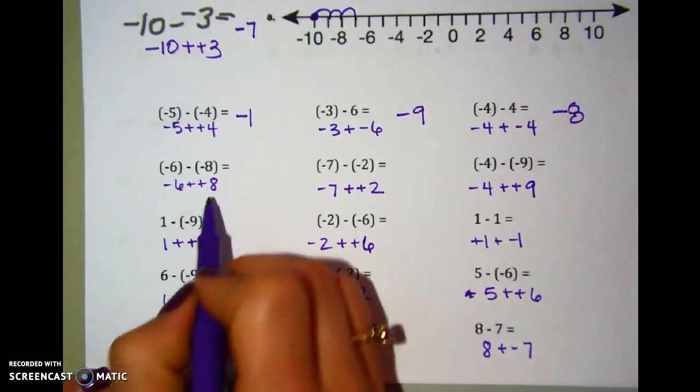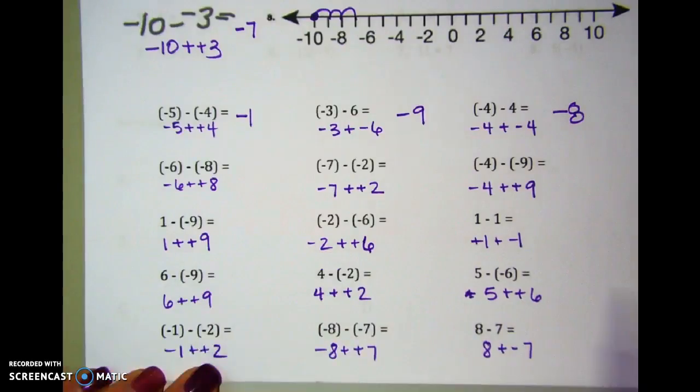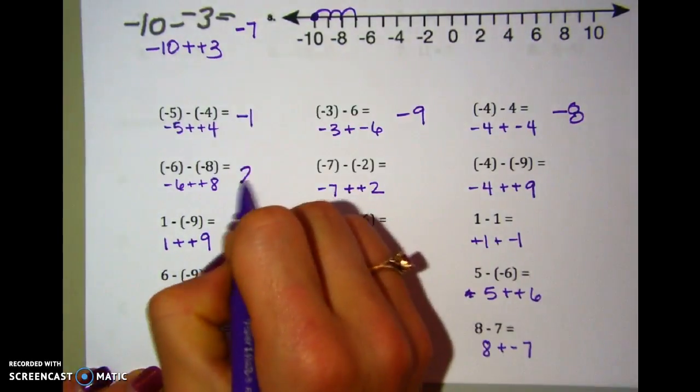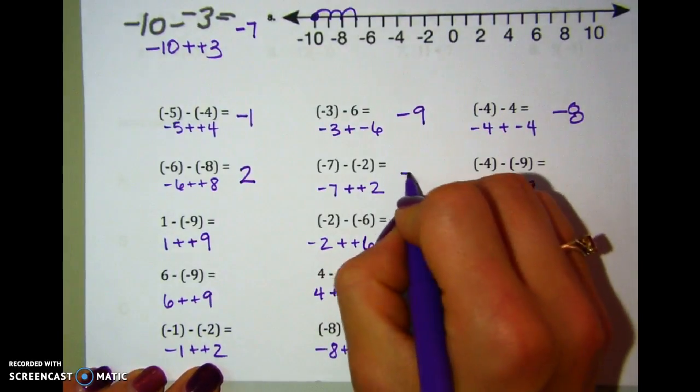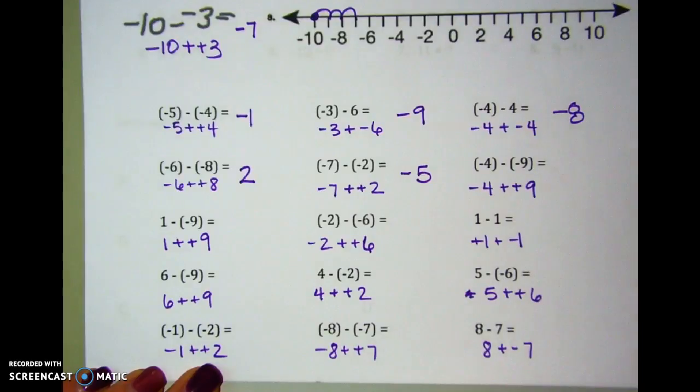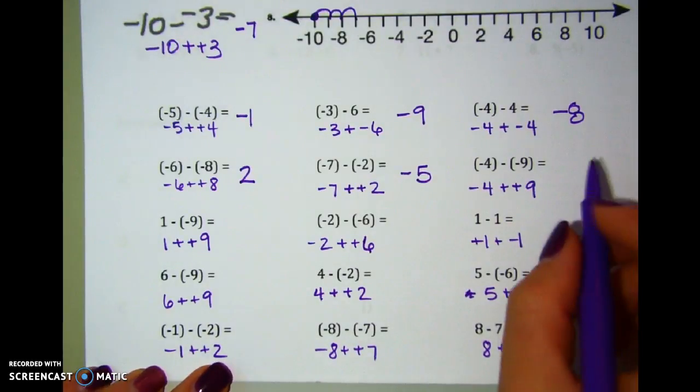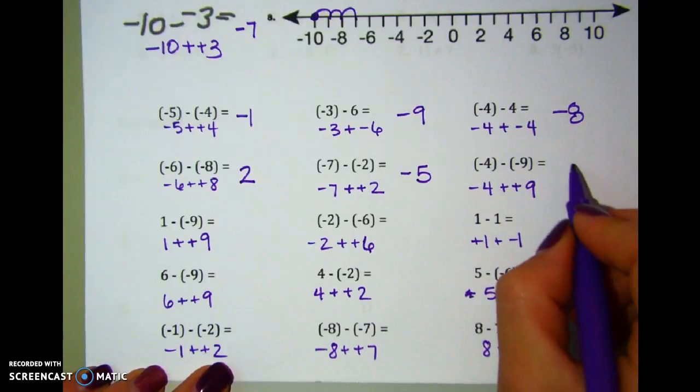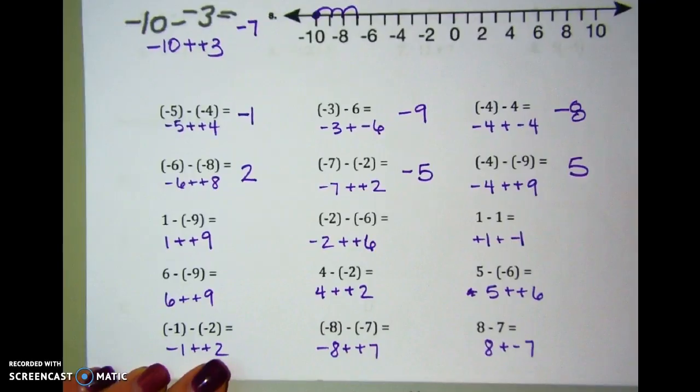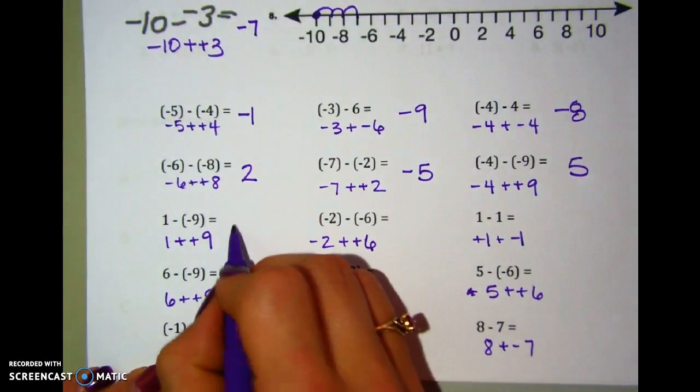Negative 6, but then add 8. I'm going to, on a number line, go all the way into positive 2. Negative 7 plus 2 would leave me at negative 5. Negative 4 plus 9. I'm adding one of each. The positive 9 is bigger, bigger by 5.